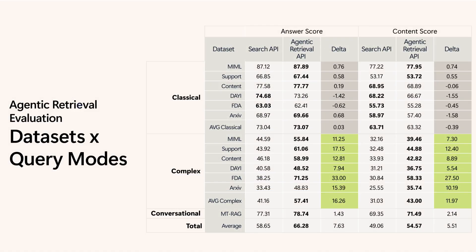Evaluations span diverse, real-world datasets across multiple industries and languages, including finance and manufacturing. Simple, single-document queries see modest improvements, while complex cross-document queries exhibit significant quality gains. This breadth shows agentic retrieval generalizes effectively, a critical factor for enterprise adoption.